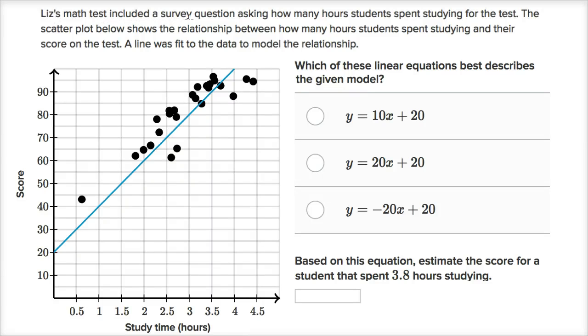Liz's math test included a survey question asking how many hours students spent studying for the test. The scatter plot below shows the relationship between how many hours students spent studying and their score on the test. A line was fit to the data to model the relationship.